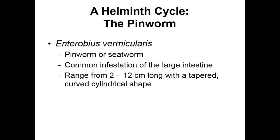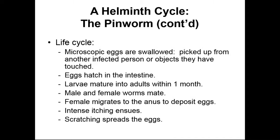The pinworm, Enterobius vermicularis, also known as the seat worm, causes infection of the large intestine. These worms can be as small as 2 centimeters or as large as 12 centimeters and have a tapered cylindrical shape. It's usually young children who are infected with pinworm. A common symptom is itchiness around the anal opening as the worms exit to the anus of the infected host. They are visible with the naked eye. The microscopic eggs can get into a person from anything they've touched or from food sources. Those eggs hatch in the small intestine and adults develop in the large intestine within a month. Both male and female worms reproduce in the large intestine, and females migrate to the anus to deposit eggs, which is where that itching occurs.